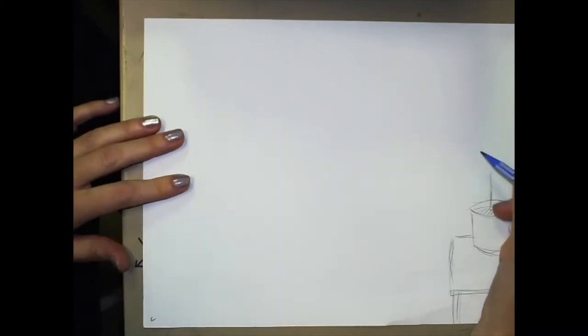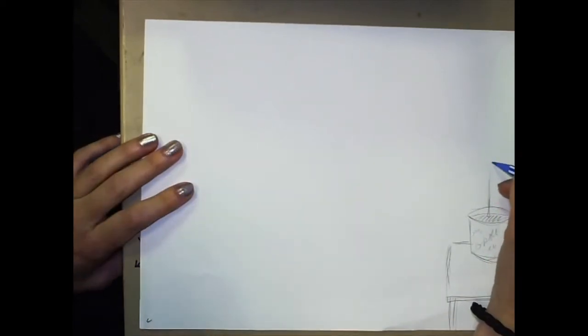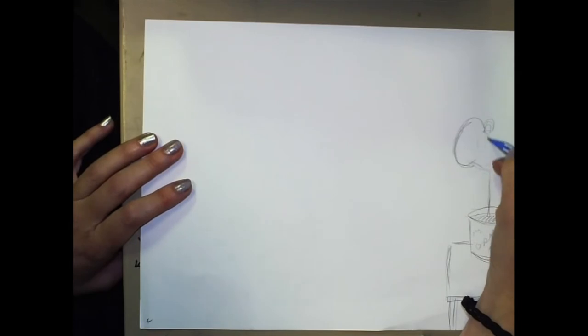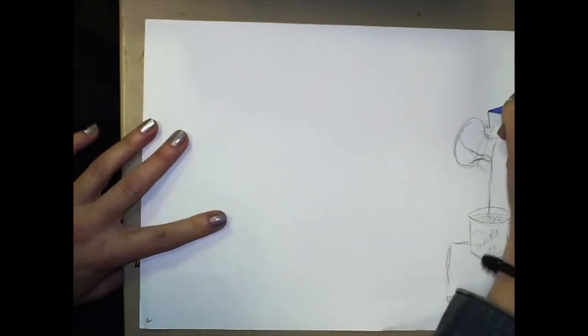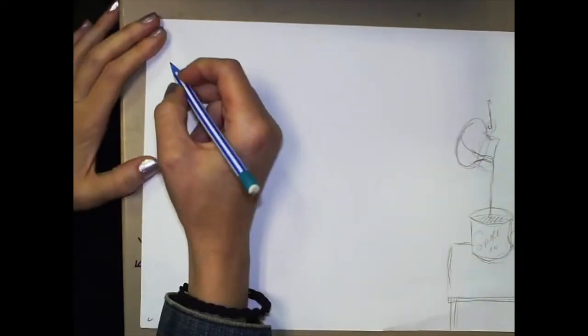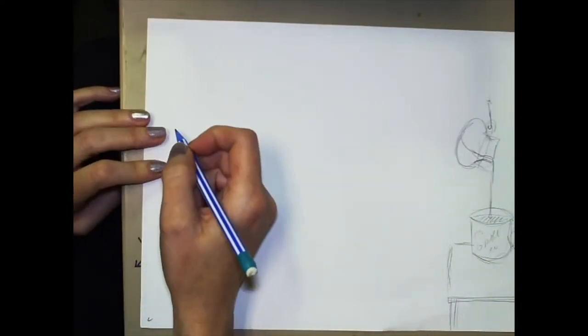All right so I'm drawing a little mug of coffee on a table and you can see the little drip of coffee being poured into it. And now I'm drawing just like an old school diner coffee pot and trying to figure out what's going to happen.